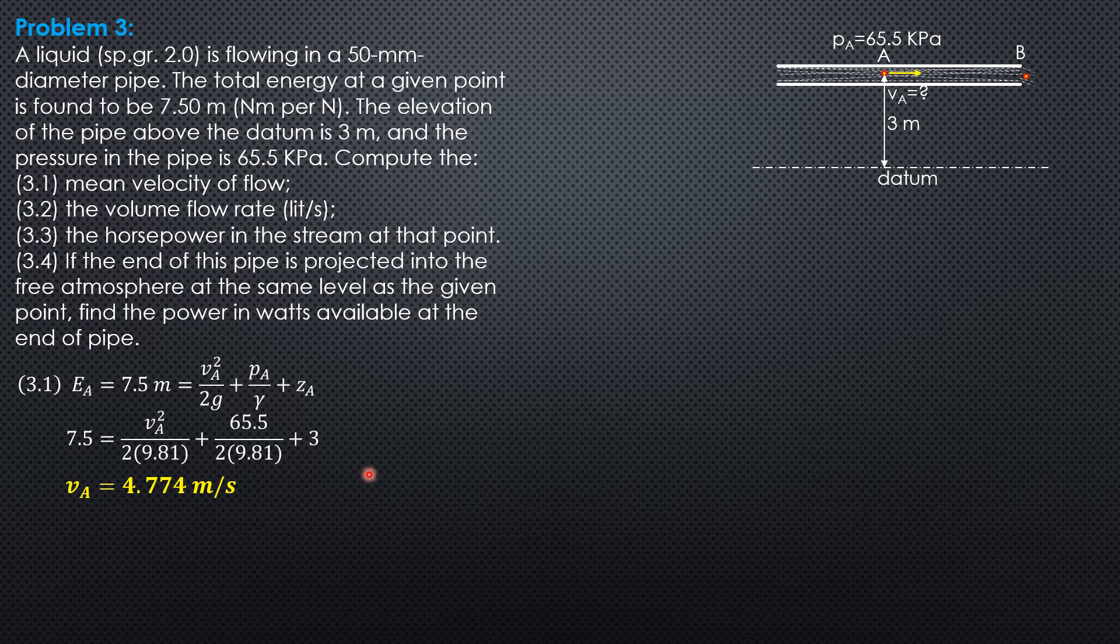The volume flow rate is Q = Area × velocity = (π/4) × D² × V = (π/4) × (0.05)² × 4.774 × 1000 to convert to liters per second. The volume flow rate or discharge is Q = 9.374 L/s.